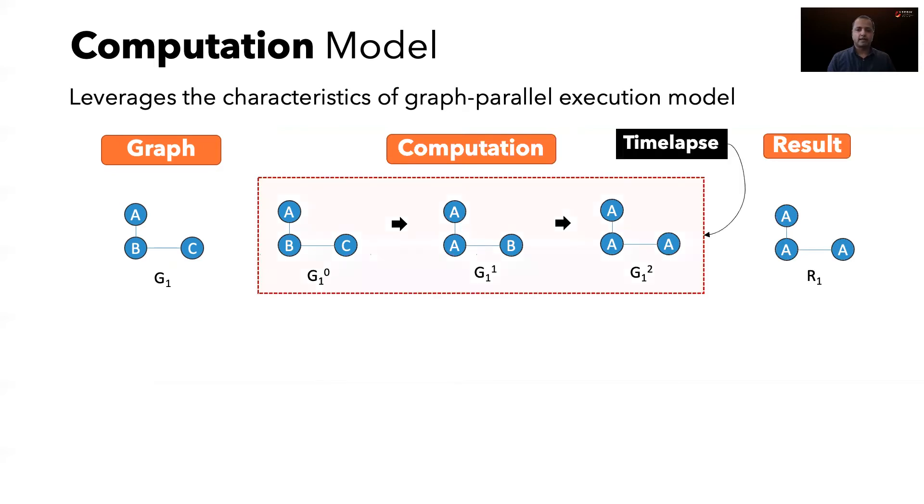We exploit the fact that iterations of graph parallel execution can be viewed as a time-lapse. Now, when G1 changes to G2, we can use time-lapse to do computations only on parts of graph that change, thus enabling incremental computation. In this case, we have a new vertex D and edge A to D. Thus, vertices A and D need recomputation. The Diff API provides this information.